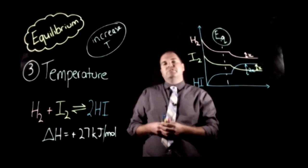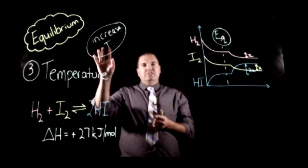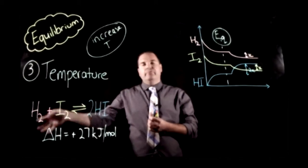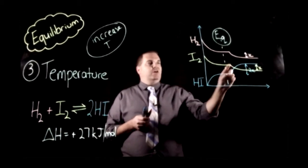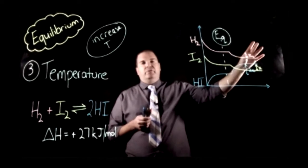Now obviously if we were going to go the opposite way and decrease the temperature, what would happen is that the back reaction would be favoured. Our hydrogen iodide would go down and our hydrogen and iodine would both go up.